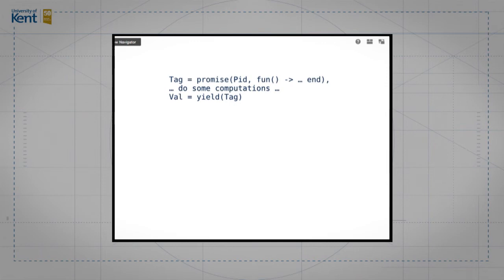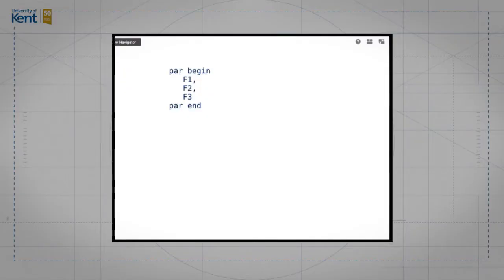But are promises and futures nice abstractions to program with? Well, some people think they are. Others don't. Some other languages have a par-do, par-end construction. Parallel-do. So in languages like Occam, you'll find a par-begin, par-end, and a sequence of statements. And this construct in a language means do the statements F1, F2, and F3 in parallel. Can we make such an abstraction in Erlang? Well, yes. The answer is rather easy.